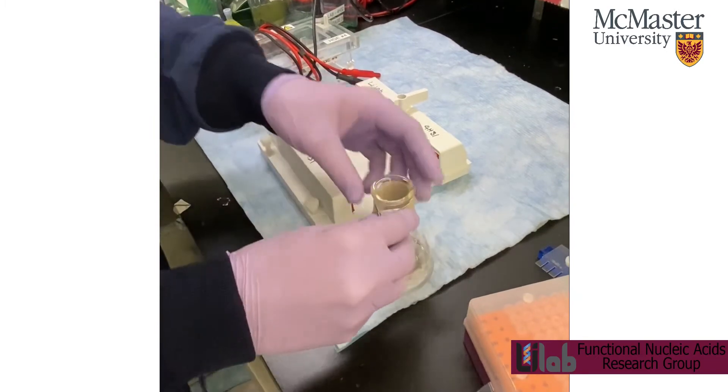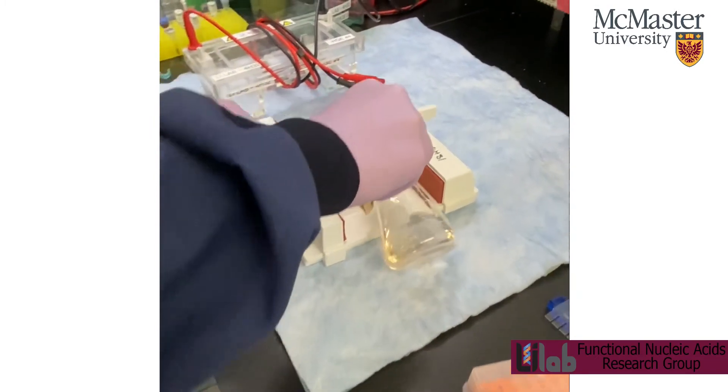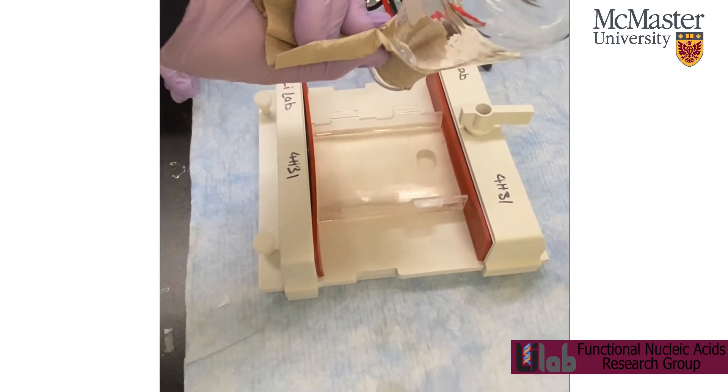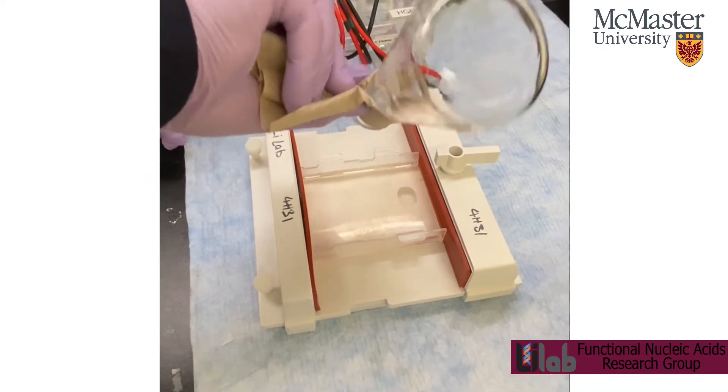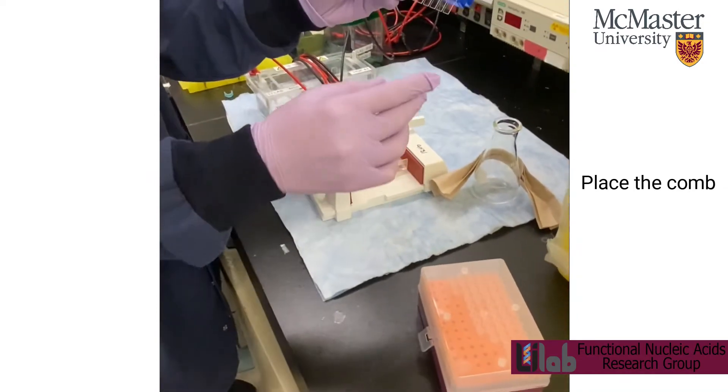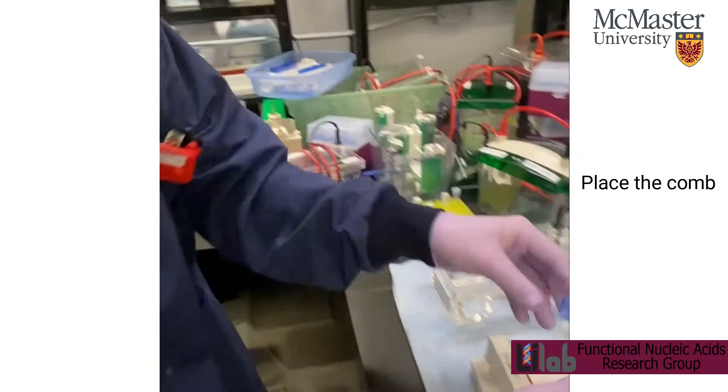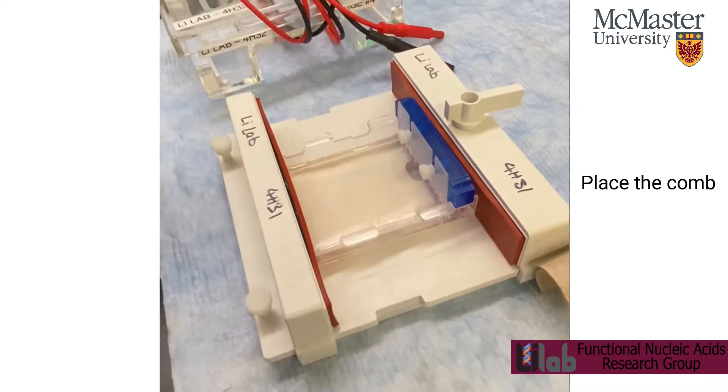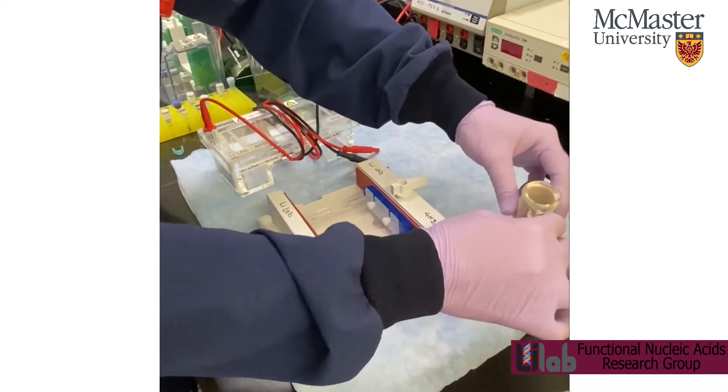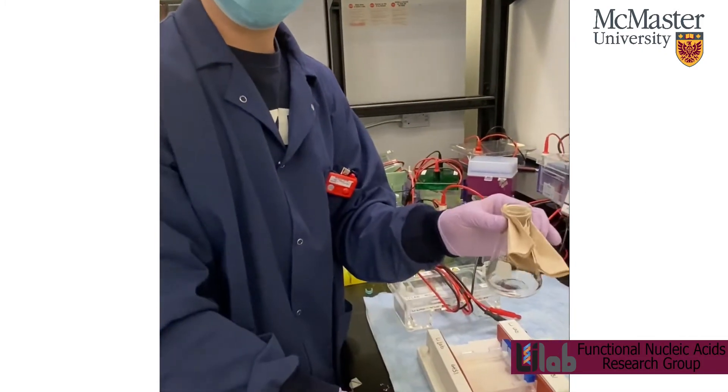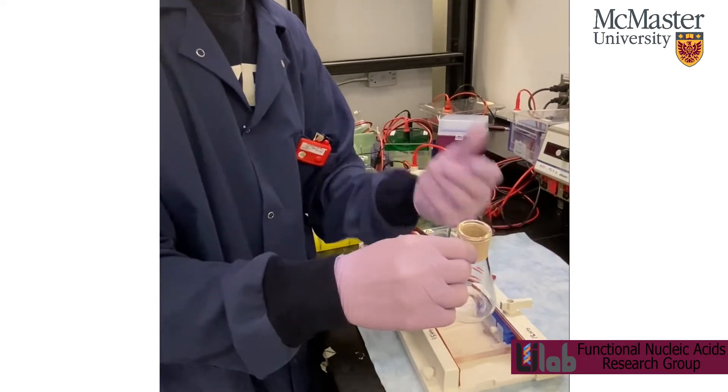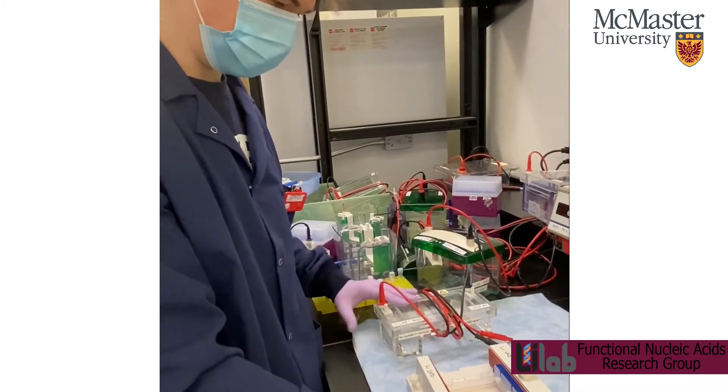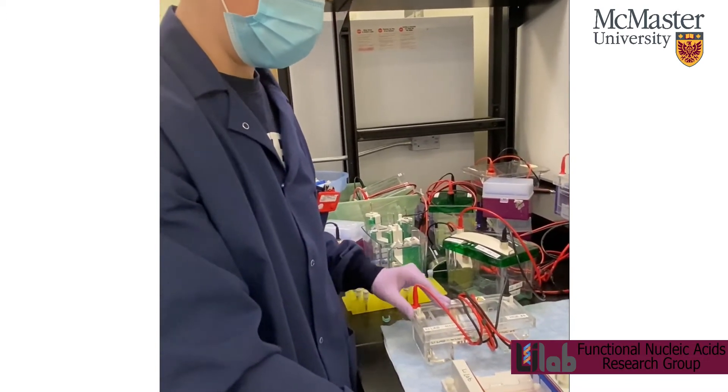So give it a little bit of a mix and then you can pour it in. And then take your comb. There are more combs over here. And just place it in the agarose like that. And then just wait for it to set. You want to wash your flask right away so the agarose doesn't harden in the flask. And then just wait for your gel to solidify. And then you can run it with buffer in the running apparatus.